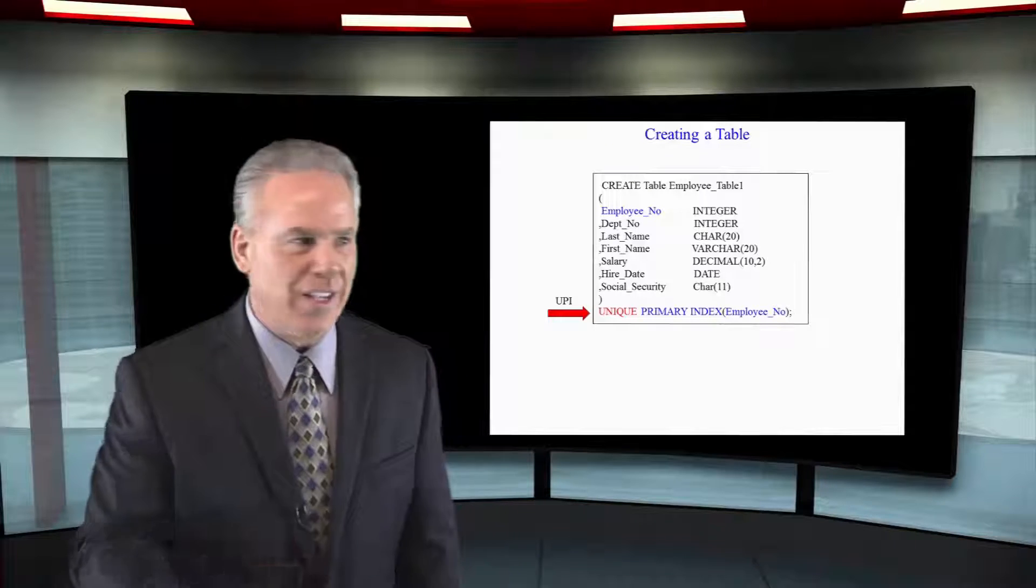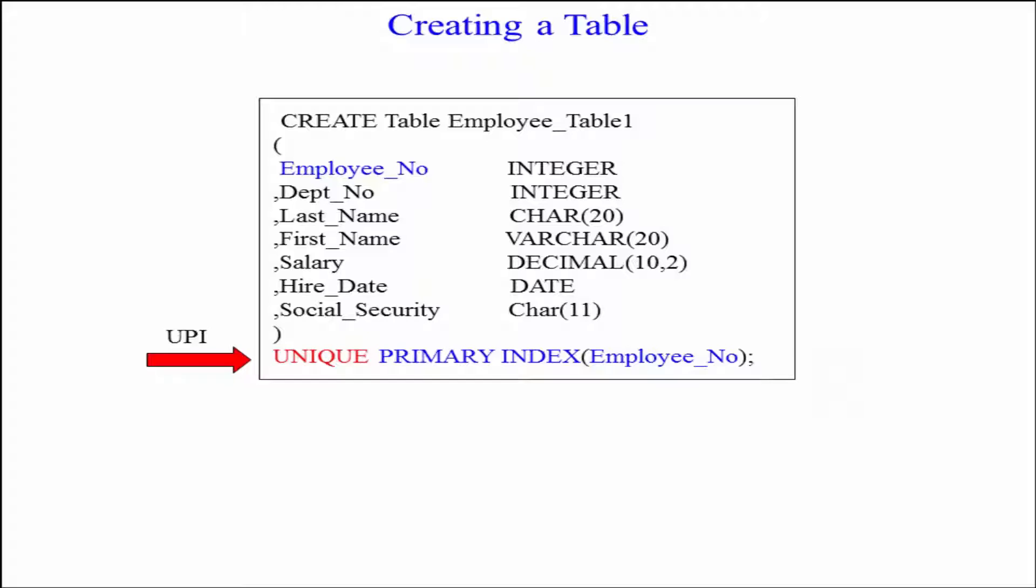Now take a look at this. This table has a unique primary index. Now we're going to create the table. We give it a name, open paren, we will list all the columns and their data types, close paren, we say unique primary index employee number. That table is created.